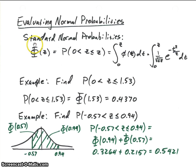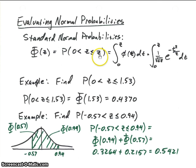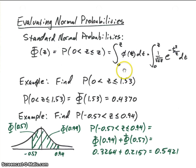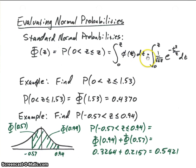We're going to define a function here called capital Φ(z). We'll define it as the probability that our random variable Z will be between 0 and little z. This is our random variable in the middle, and this is the limit that we're going to integrate to. So we're going to integrate our density function from 0 to z, and integrate this small phi from 0 to z.